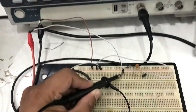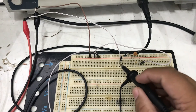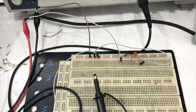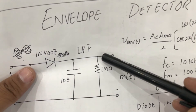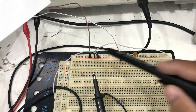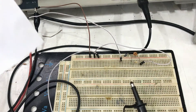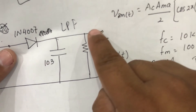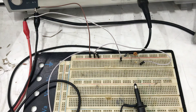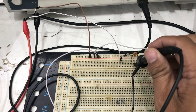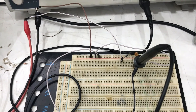Now the next step: I want to look at the demodulated output using the envelope detector. I need to attach my oscilloscope probe at the output part of the circuit — after the diode, across the RC network. The positive probe goes there and the negative is already grounded to the common ground. Let me leave the probe in place and look at the output.